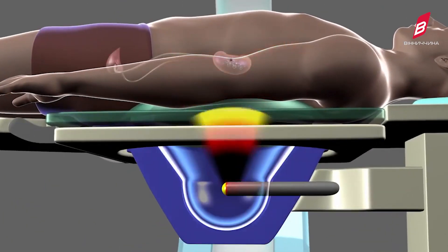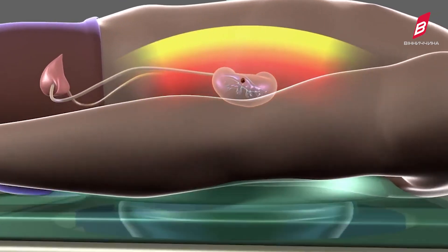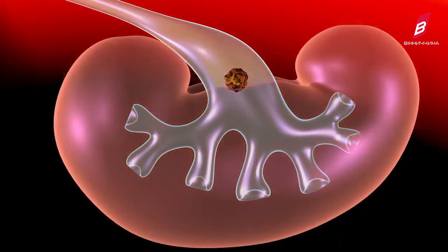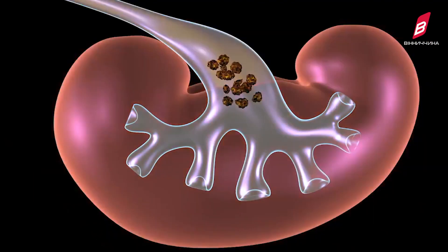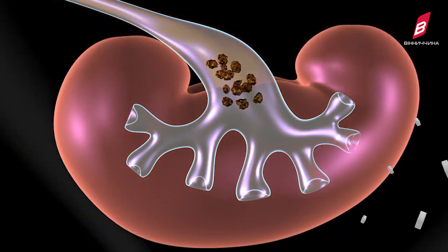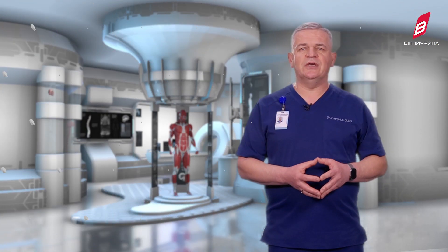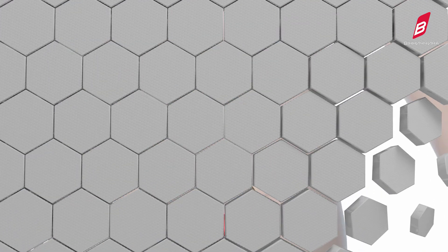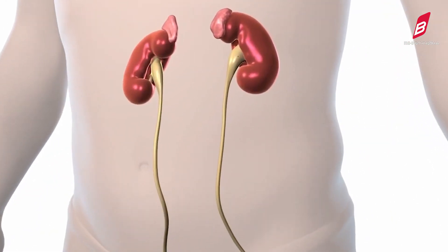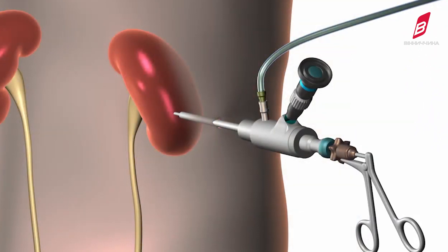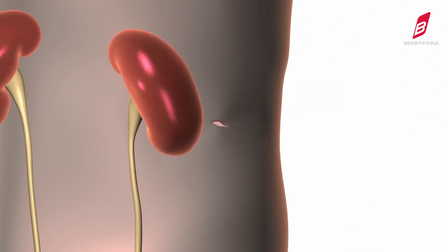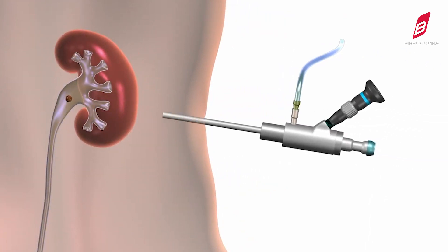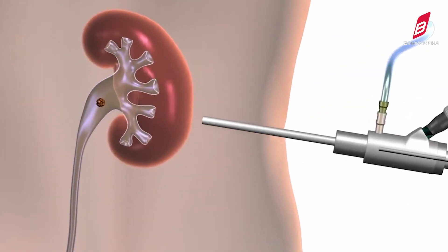Екстракорпоральна ударно-хвильова літотрипсія – трощення каменя ультразвуком без проникнення в середину тіла на спеціальних апаратах. Черезшкірна пункційна нефролітотрипсія – лазерна, ультразвукова або пневматична, коли через невеличкий один чи два проколи в поперековій ділянці ми візуалізуємо камінь в нирці, руйнуємо його та видаляємо маленькими шматочками.